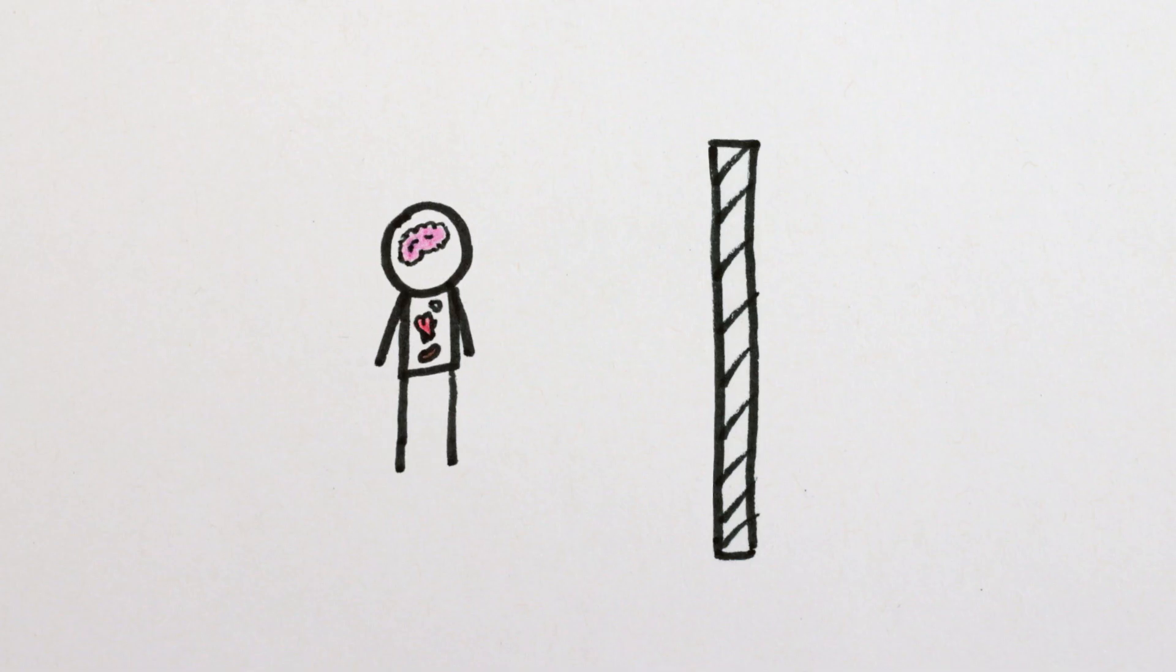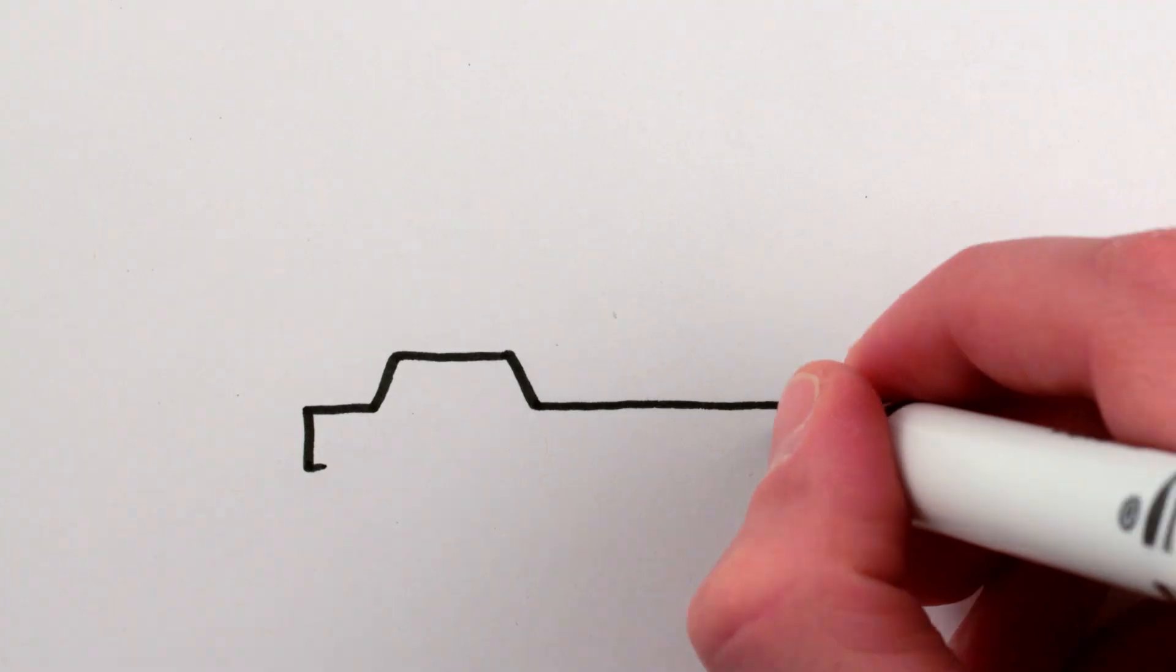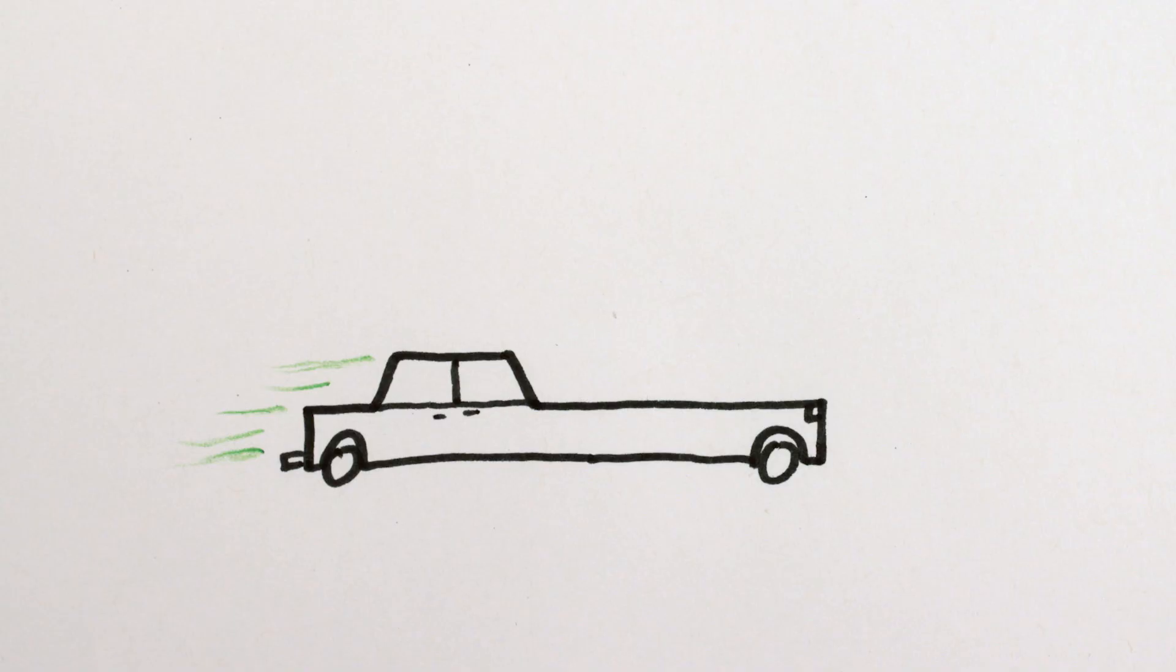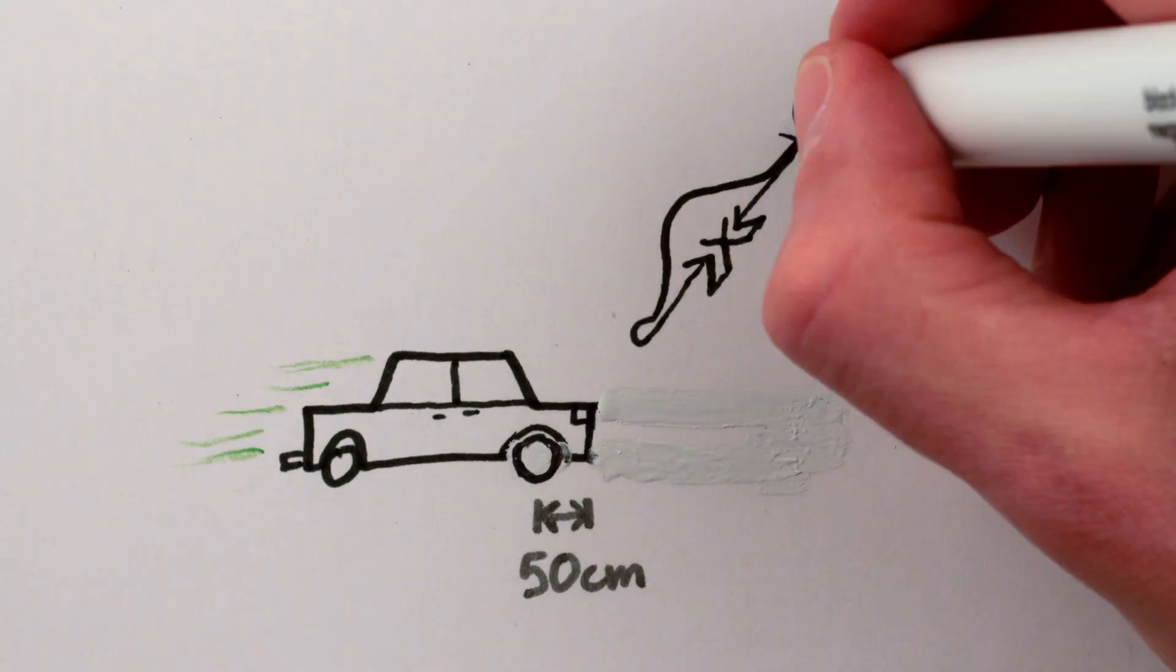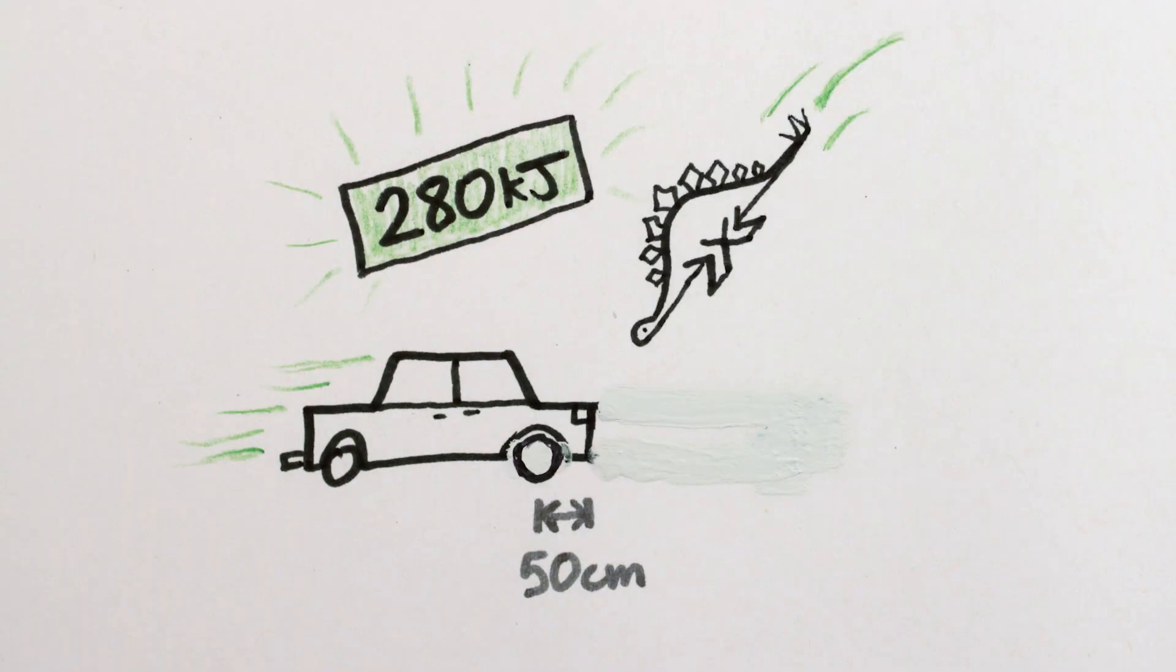Lots of acceleration over a very short time is not good for soft human brains and organs. However, people don't like driving cars with Pinocchio-length noses, so most cars only have around 50 cm of crushable space in which to dissipate the energy equivalent of our falling stegosaur.